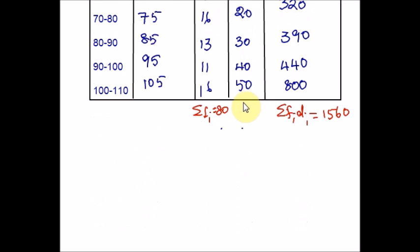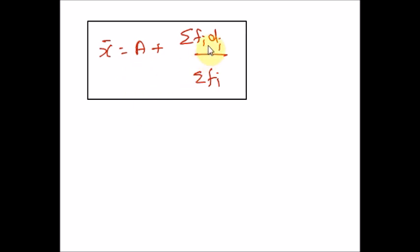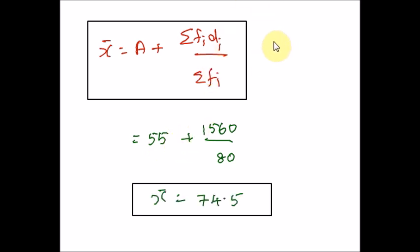Let us plug all these values into the assumed mean formula: X̄ = A + (Σfi·di / Σfi). A is 55, the summation of fi·di is 1560, and the summation of frequencies is 80. So 1560 divided by 80 equals 19.5, and adding 55 gives 74.5. It is always advisable to create a table to make the calculation mess-free. Mean is a very simple, fundamental basic for statistical data. In our next video, let us discuss mean for ungrouped data. Hope you are clear with the concept — see you in the next video, thanks for watching, have a good one.